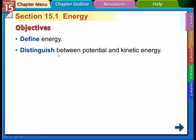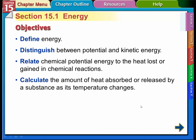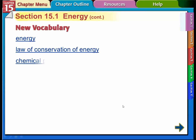These are the objectives. We're going to define what energy is, distinguish between potential and kinetic energy, and talk about heat loss and gained in chemical reactions. We'll do some calculations, of course, because this is chemistry. Quick review: temperature measures the average kinetic energy of the particles in a sample of matter, so we're going to be doing calculations that involve temperature again in this chapter.